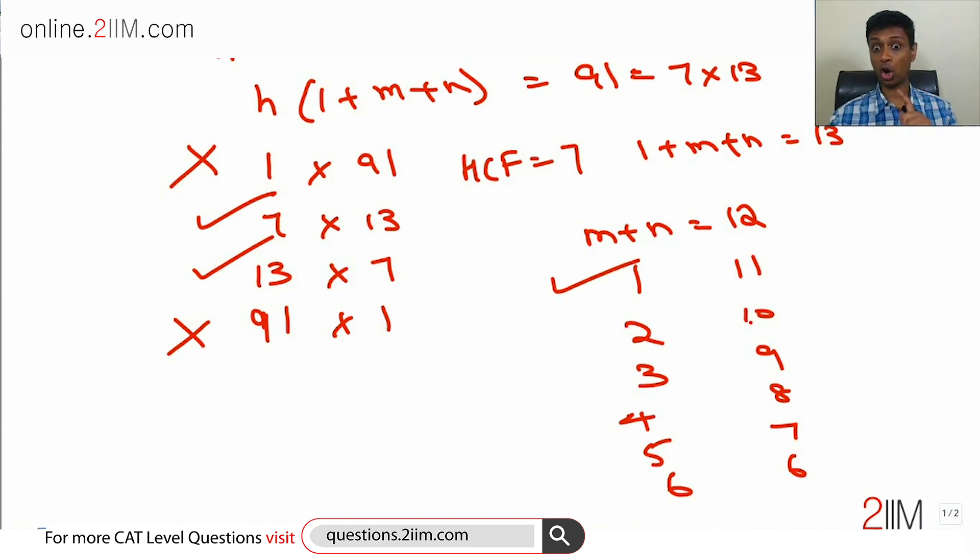2 and 10 is not possible. Remember that if HCF is 7, m and n are 2 and 10, 2 into 7 and 10 into 7, those two numbers are not coprime. 2 into 7 and 10 into 7, their HCF is not 7. So the HCF will not stay as 7 if the numbers are not coprime.